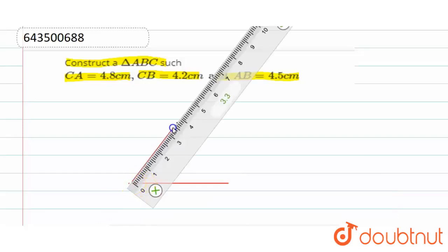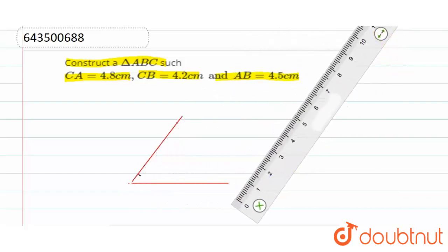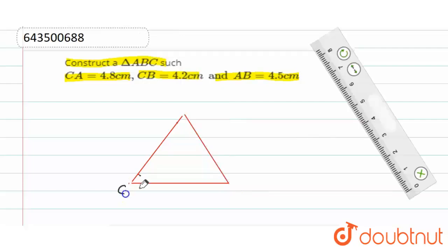And finally we'll draw 4.5, AB. So this is 4.5. This one is C, this one is A, and this one is B, ABC. CA is 4.8 and CB is 4.2, while AB is 4.5.